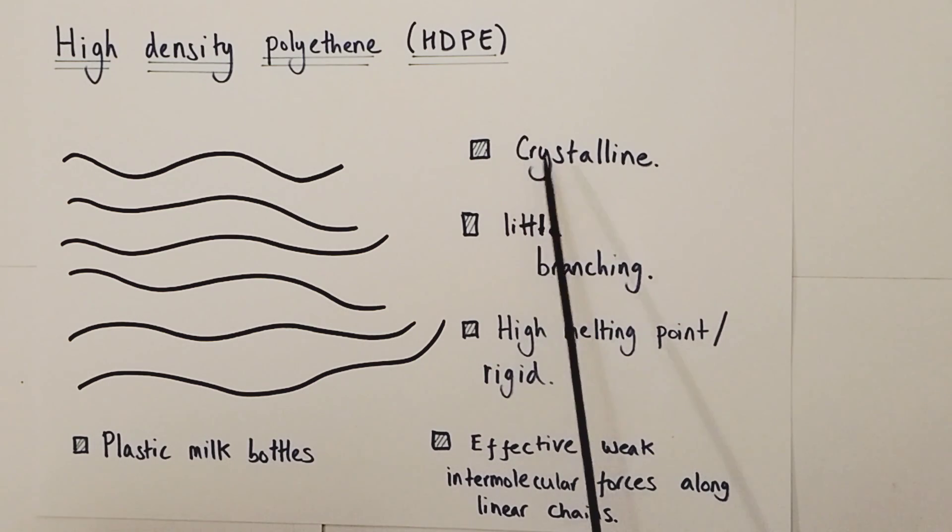What you find about the structure of high density polyethene is that it is crystalline in nature. That means it's regular and well organized. There is little evidence of branching in this structure. These are linear chains that can get very close together. This will lead to a high melting point and a much greater level of rigidity in the plastic produced at the end of this process. And that's because these polymer chains can form very effective weak intermolecular forces along the surface area of their linear chains. You're going to get a lot of intermolecular forces and reasonably strong weak intermolecular forces along these linear polymer chains which are compacted close together.